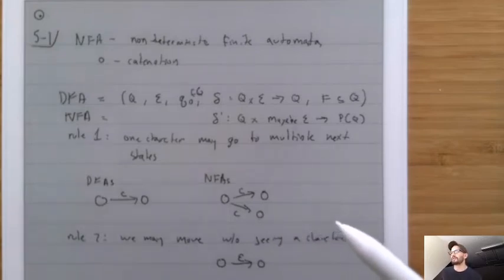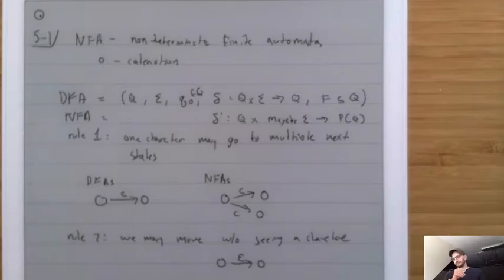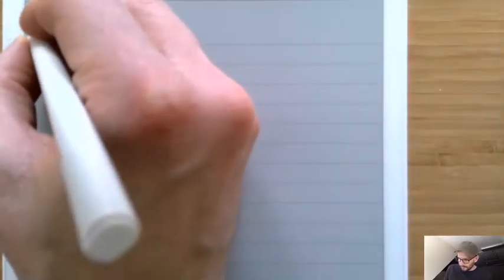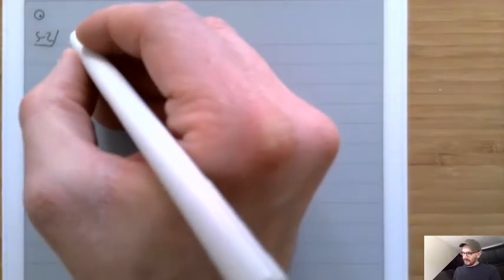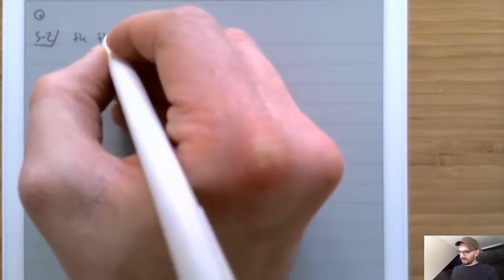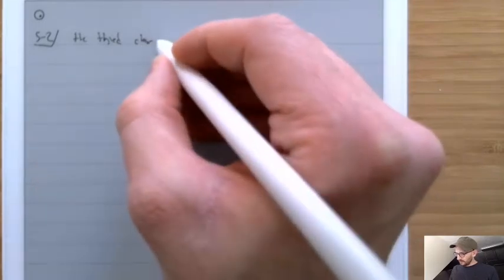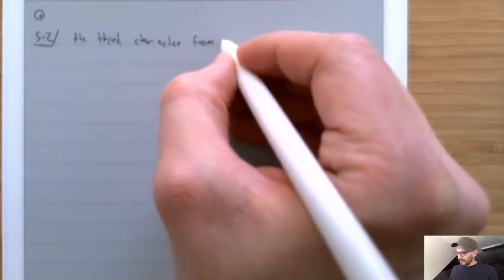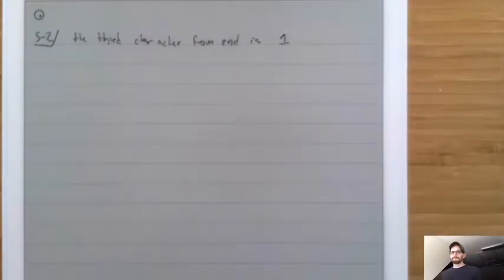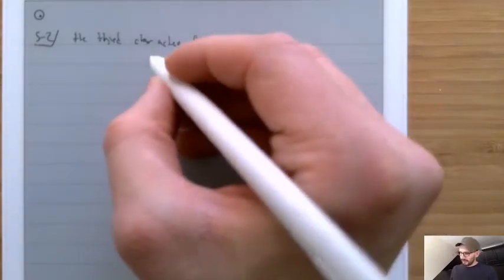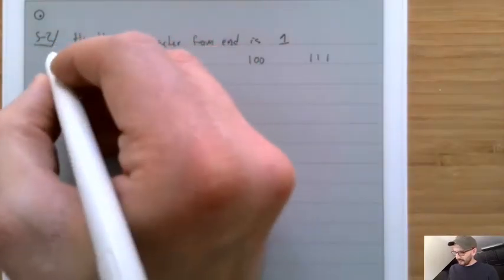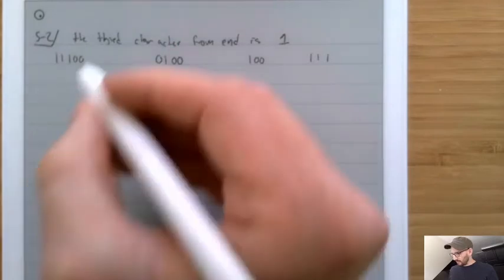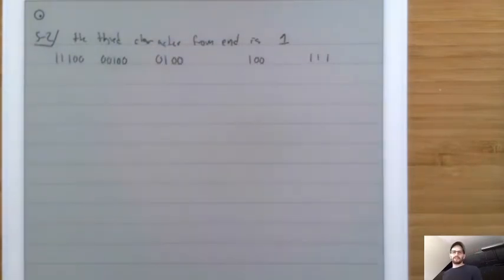Let's look at an example of a machine where the third character from the end is 1. Examples in this language would be strings like 0100, 1001, 1110, 0001, and so on — lots of different strings are inside of this language.